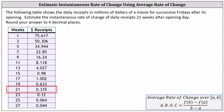The following table shows the daily receipts in millions of dollars of a movie for successive Fridays after its opening. Estimate the instantaneous rate of change of daily receipts 21 weeks after opening day. Round the answer to four decimal places.